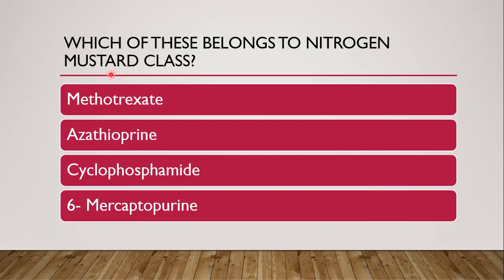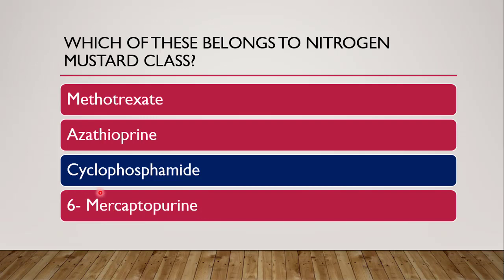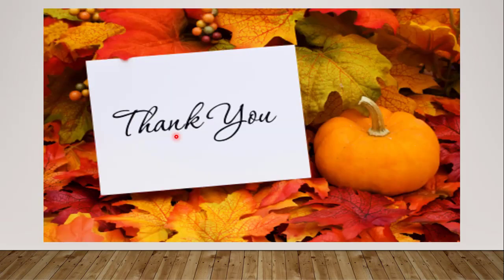Next question: which of these belongs to the nitrogen mustard class? In the classification of anti-cancer drugs, nitrogen mustard falls under alkylating agents, with subclasses including nitrogen mustards, aziridines (ethylenimines), and alkyl sulfonates. The options are methotrexate, azathioprine, cyclophosphamide, or 6-mercaptopurine. The correct answer is cyclophosphamide. Methotrexate is a folic acid antagonist; azathioprine is a pyrimidine antagonist anti-metabolite; and 6-mercaptopurine is a purine antagonist anti-metabolite.